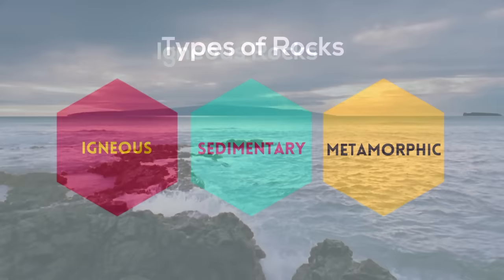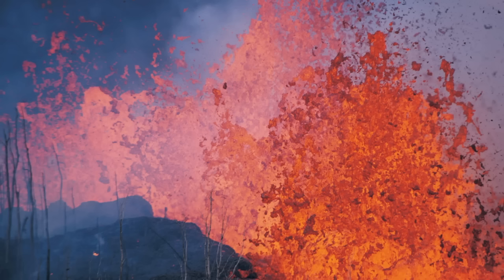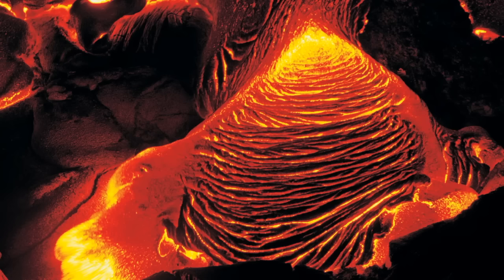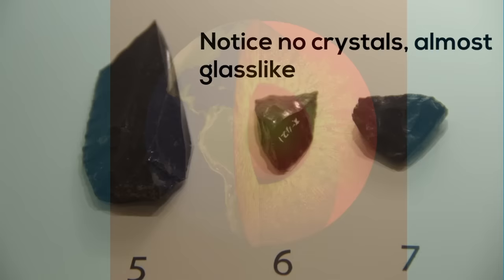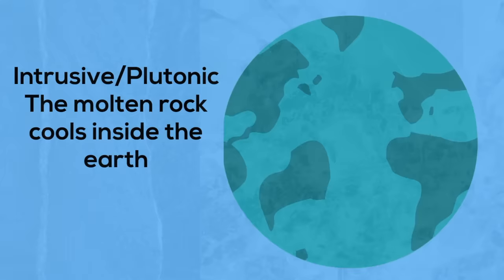Igneous rocks are formed when magma or molten rock cools. This magma can either flow to the surface of the earth and cool quickly — these rocks are called extrusive or volcanic igneous rocks, and they generally have very small crystals. Or they can cool inside the earth; these are called intrusive or plutonic rocks, and they generally have larger crystals than the extrusive igneous rocks.